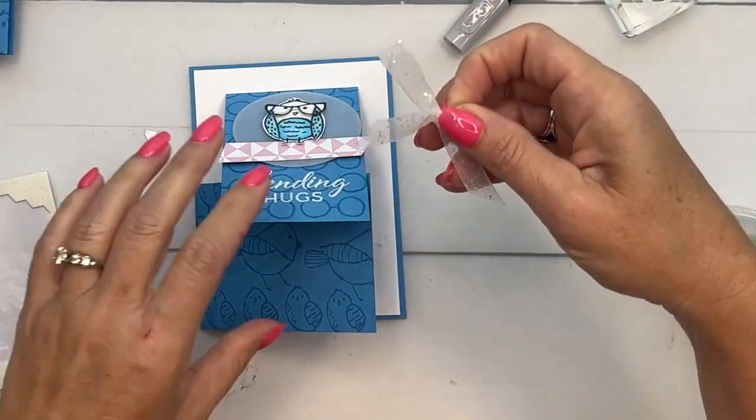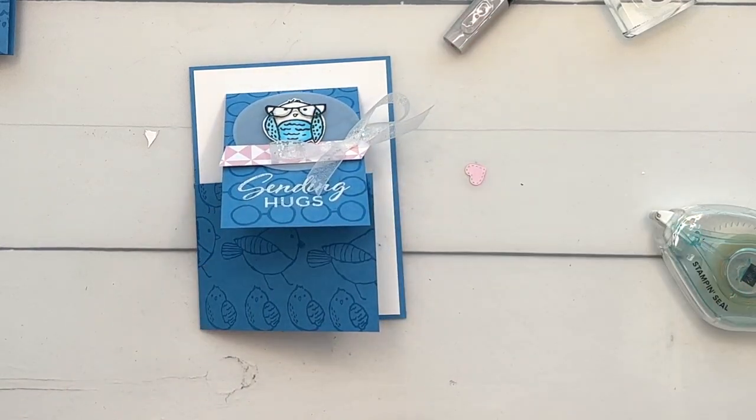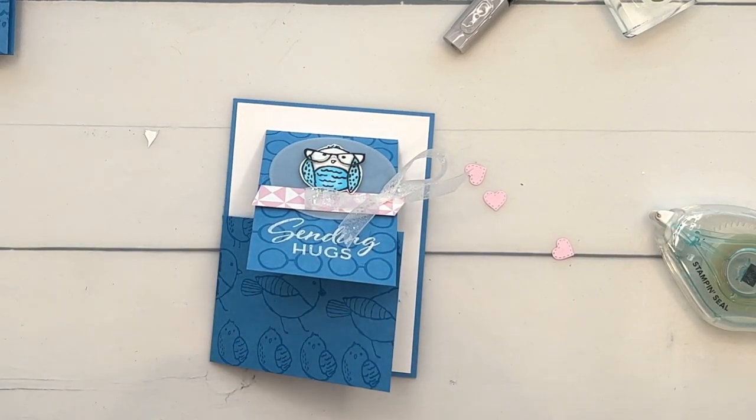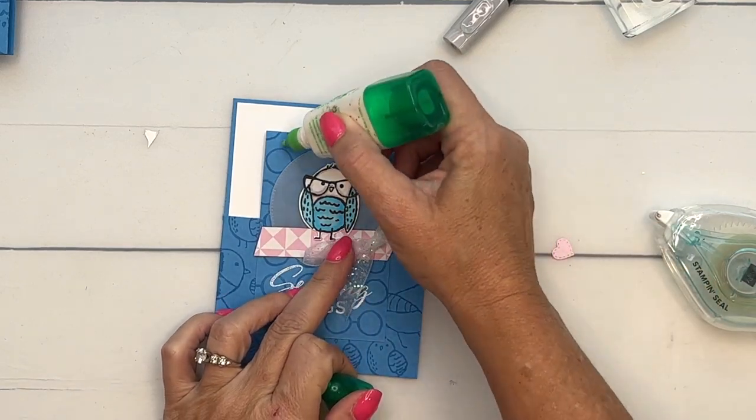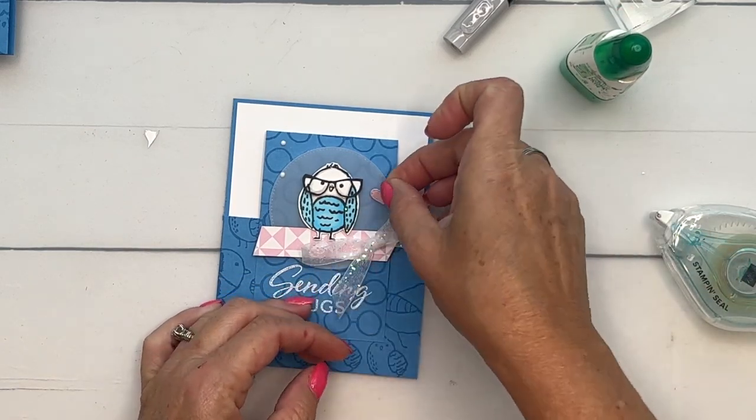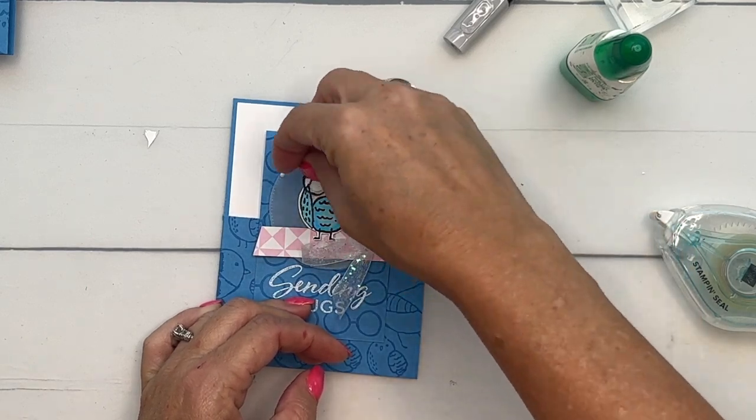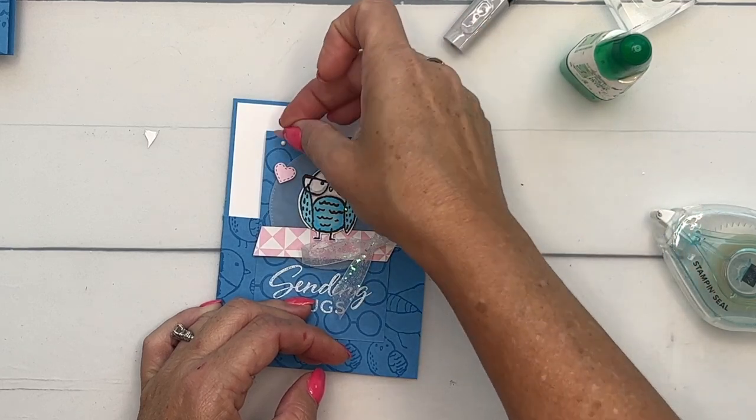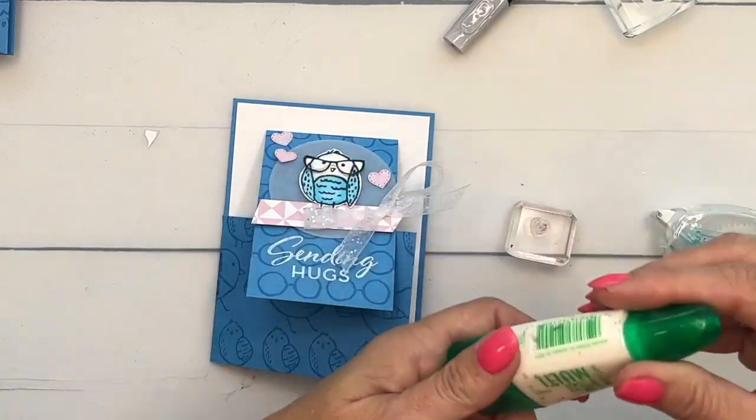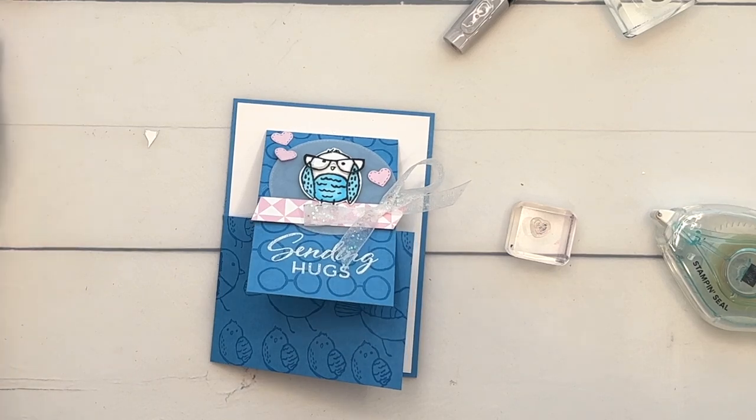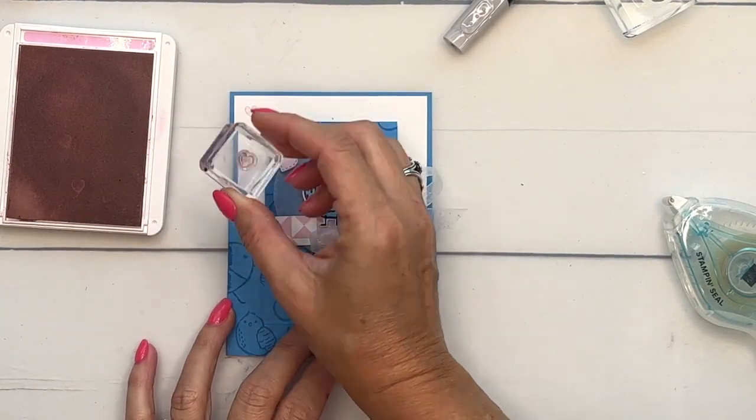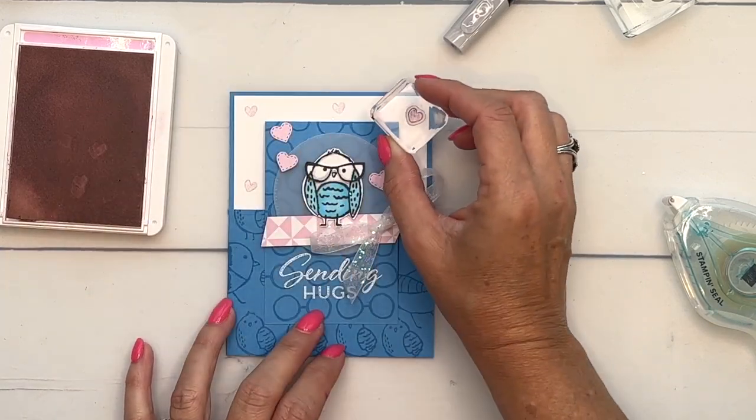I have cut out some little Bubble Bath hearts. These are from the Give It A Whirl die set. We'll just add a couple around our little owl and then carry over the hearts with this little heart stamp that I told you was from the Crafting With You stamp set. Take some Bubble Bath ink and just stamp that little heart around on the white. And then we are done.